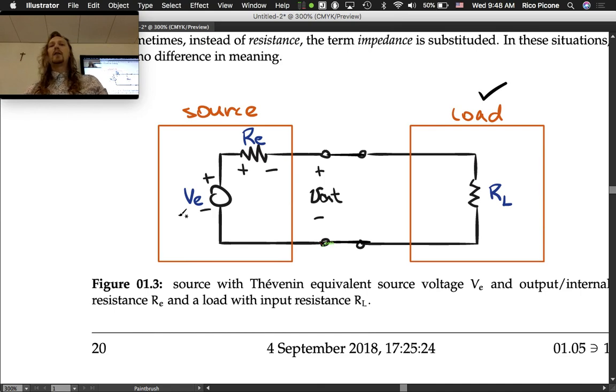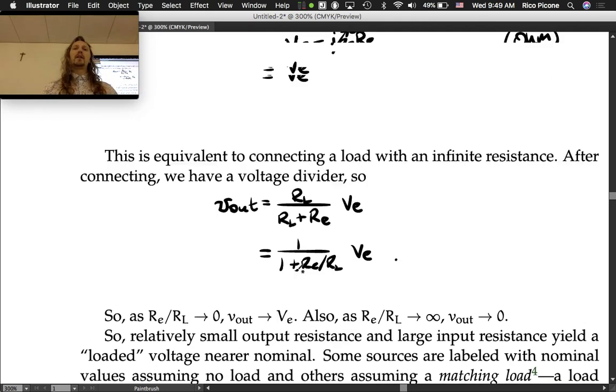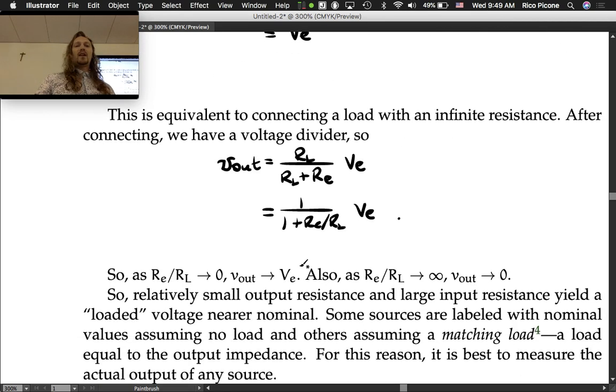If we've got a really large load resistance R_L compared to the output resistance of the source, then our output voltage is essentially the same as the input voltage. It doesn't affect the circuit. The circuit started out with v_out being v_e, and if R_e over R_L goes to zero, then v_out is still v_e, so it's like we didn't connect anything.